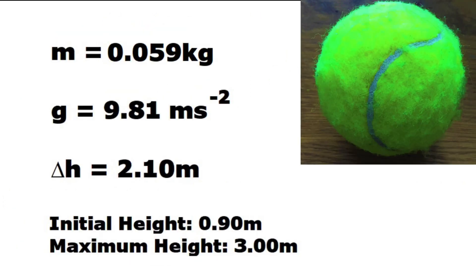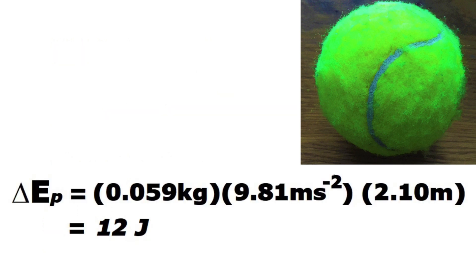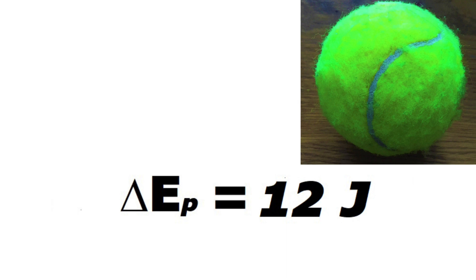This tennis ball has a mass of 0.059 kilograms and is thrown from 0.90 metres above ground level to 3 metres from the ground at its highest point. Therefore, the change in height is 2.10 metres. We are once again going to assume that acceleration due to gravity when air resistance is negligible has a value of 9.81 metres per second squared. So the ball's change in GPE can be calculated by multiplying 0.059 kilograms by 9.81 metres per second squared, and then multiplying by 2.10 metres. We're going to give our answer to two significant figures, because that is the number of significant figures present in the value in the calculation with the fewer significant figures. So our answer is 12 joules.